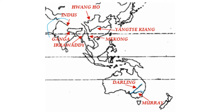Then we have two rivers in India. Here, one is the Indus, which goes like a triangle. Then here we have the Ganga — the Ganga is flowing into the Bay of Bengal. On the right-hand side of Ganga we have two more: one is the Irrawaddy and the other one is the Mekong, which is the long one.